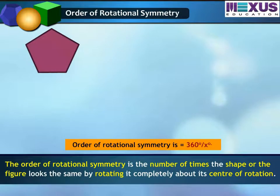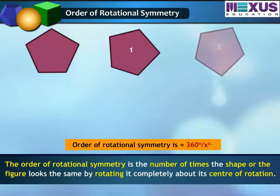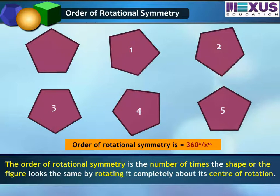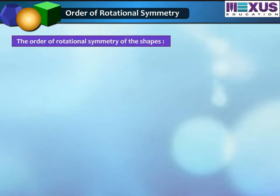The order of rotational symmetry is the number of times the shape or figure looks the same by rotating it completely one rotation about its center of rotation. Let us know the order of rotation of different shapes.